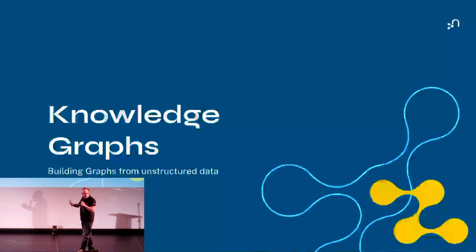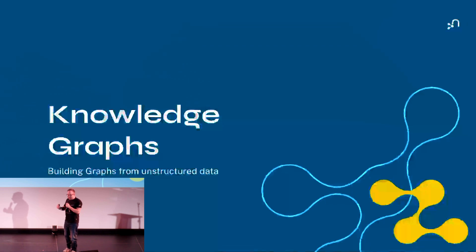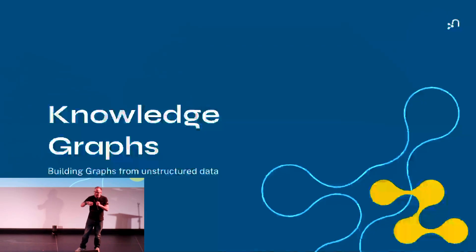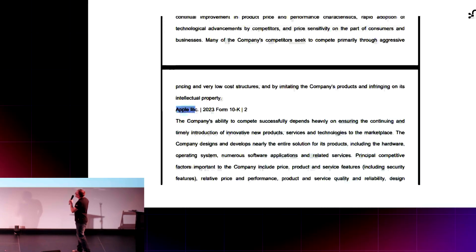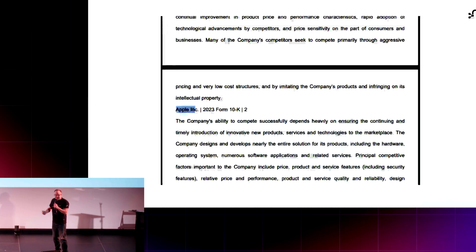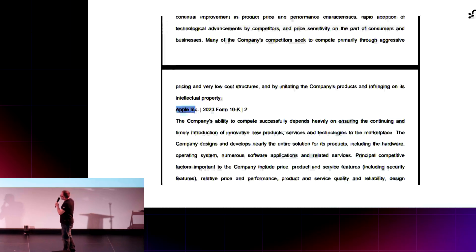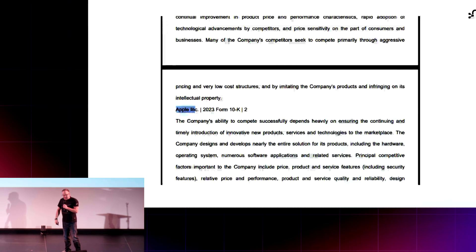So, knowledge graphs — how do we create these things? You can do it the hard way: understand your data, create those entities and relationships manually. But I want to explore doing it the easy way: entity and relationship extraction. I have a piece of unstructured data — this is the SEC submission from Apple Incorporated, probably 2023 or 2024. US companies have to submit financial information every six months about their risks, metrics, and all sorts of things.